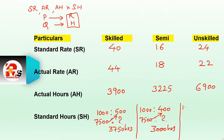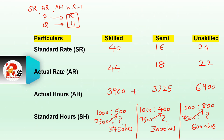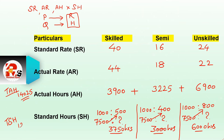Similarly for unskilled: 1000 articles require 800 hours, so for 7500 units that will be 6000 hours. Now totaling is necessary: actual hours total = 3900 + 325 + 6900 = 14025. Standard hours total = 3750 + 3000 + 6000 = 12750. These totals will be needed when we solve labor mix variance.